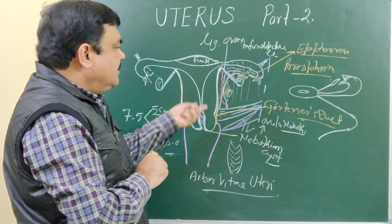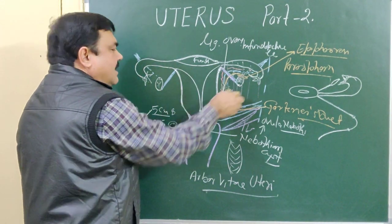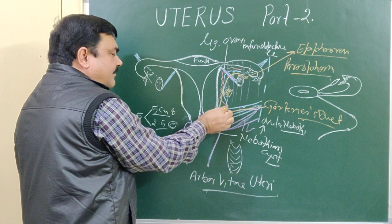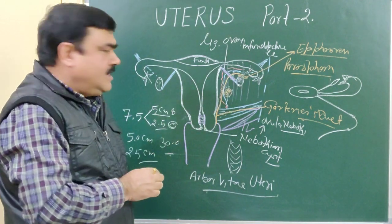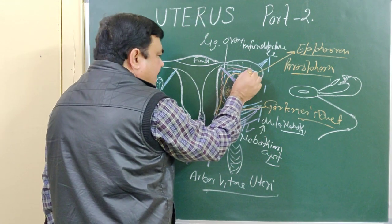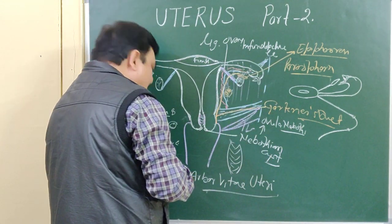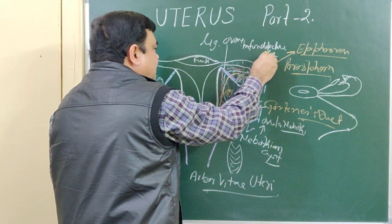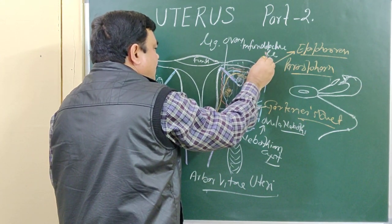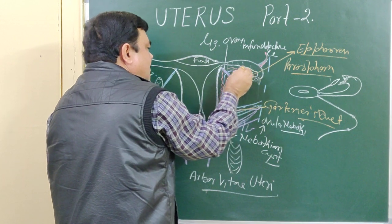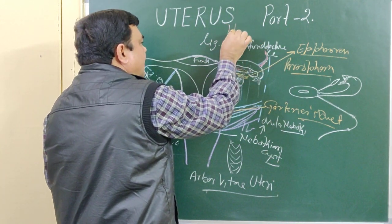Now, arterial supply: the major portion is supplied by the uterine artery, which is a branch of the internal iliac artery. Some part is also supplied by the ovarian artery, which is a branch of the abdominal aorta.